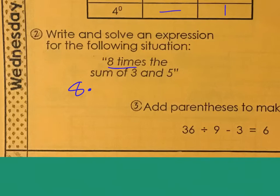Number 2. Write and solve an expression for the following situation: 8 times the sum of 3 and 5. Whoa. So, we kind of have to think about how words translate into mathematical symbols here. 8 times the sum of... Well, I know what 8 times means. It means 8 times. How would I show the sum of 3 and 5? Well, sum means add. So, I'm going to go 3 plus 5.